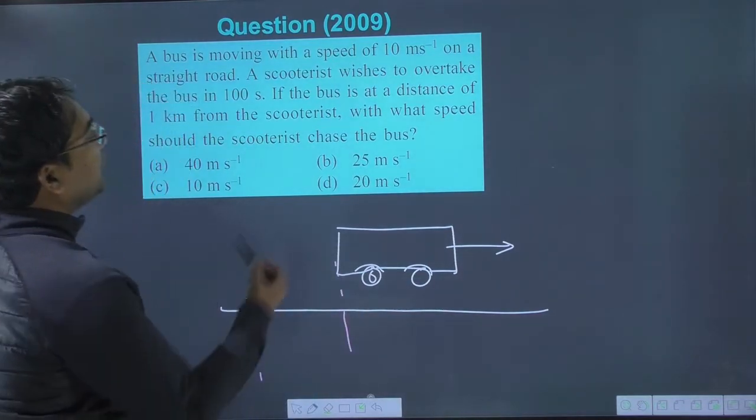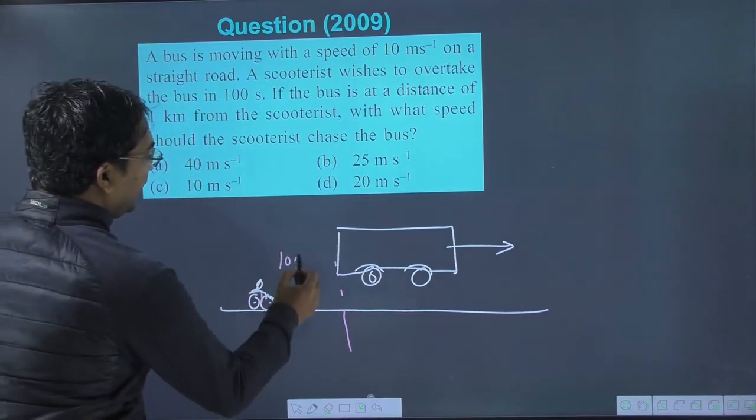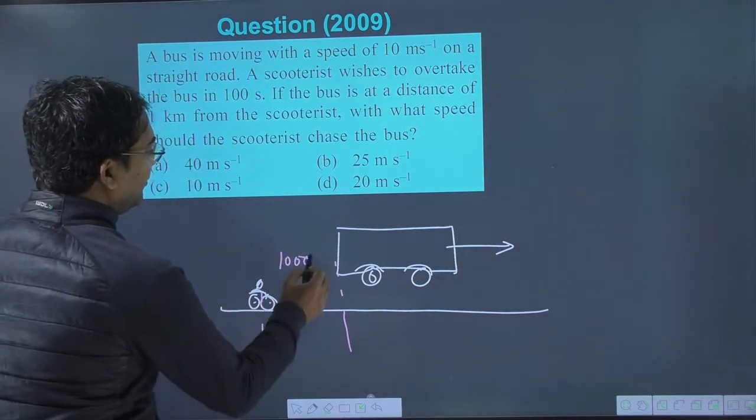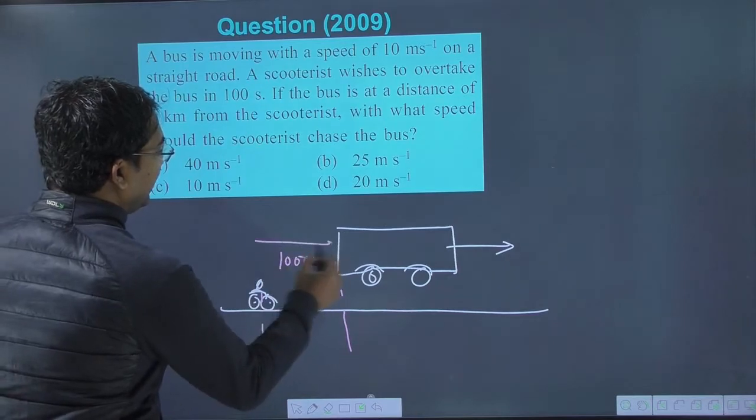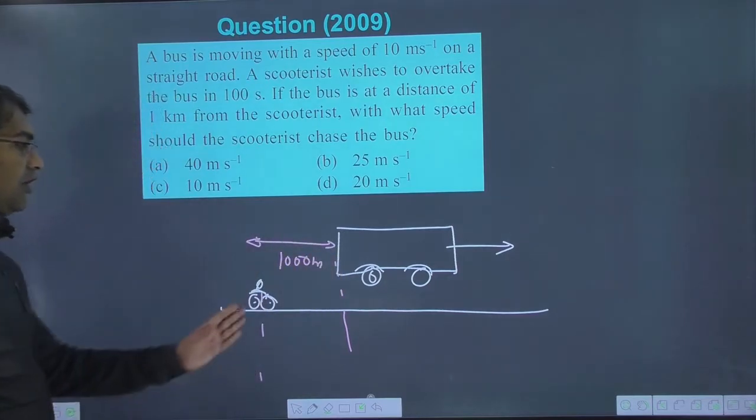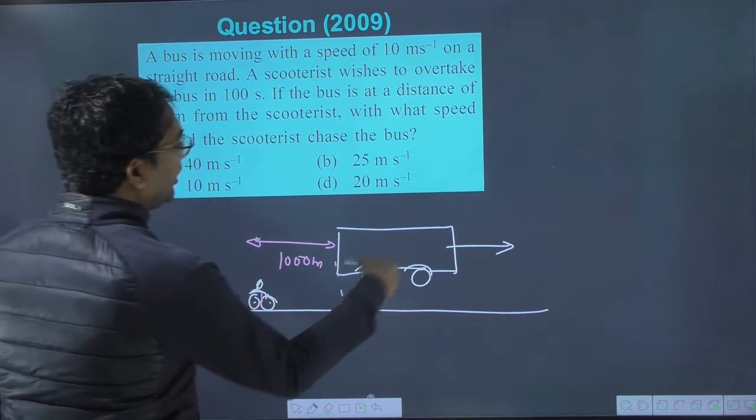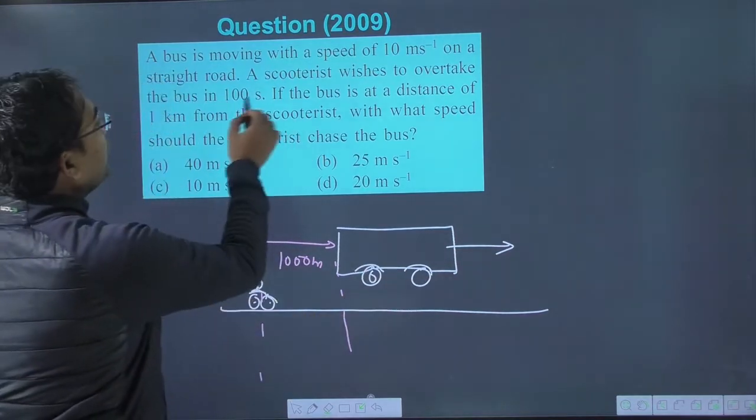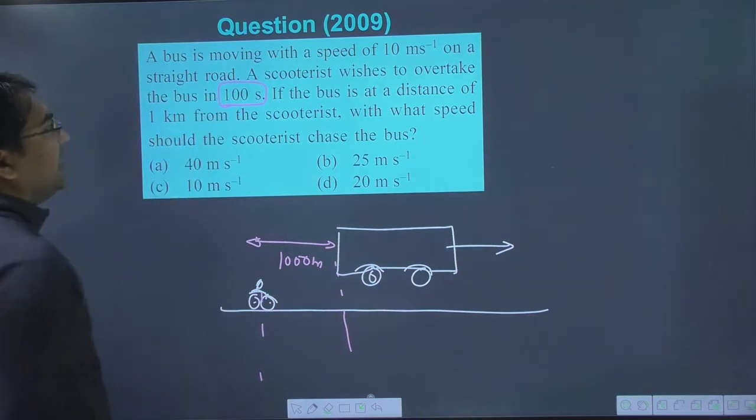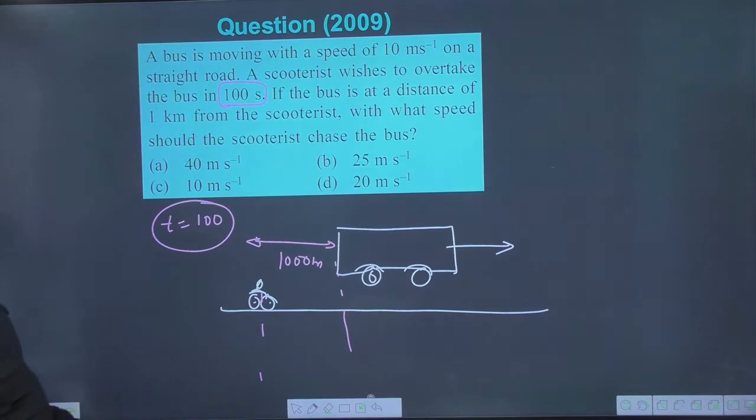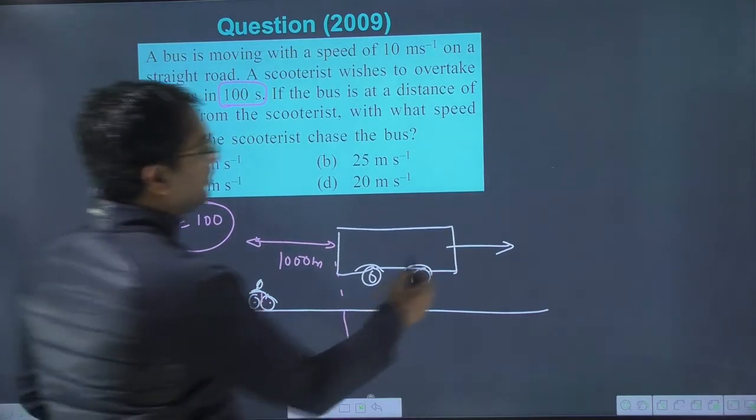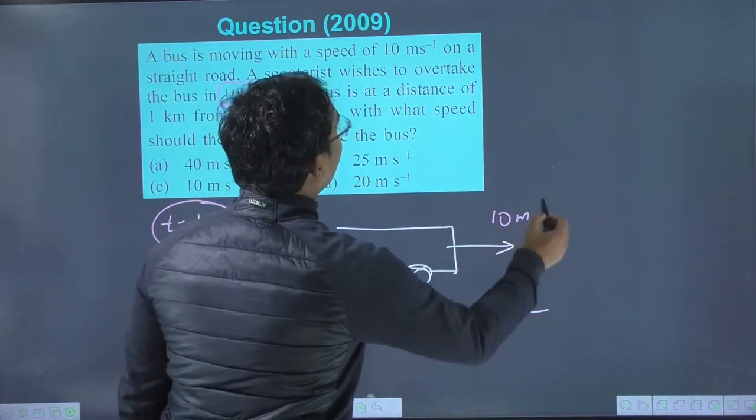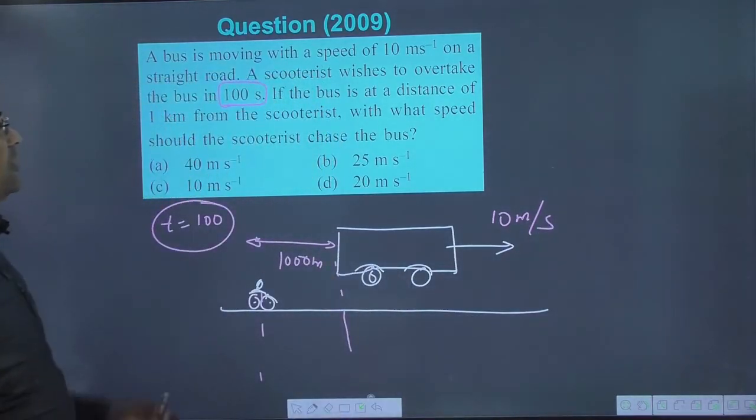The bus is at a distance of one kilometer. This is the distance between them, one kilometer. And the time for overtaking is 100 seconds. The bus is moving with a speed of 10 meters per second.